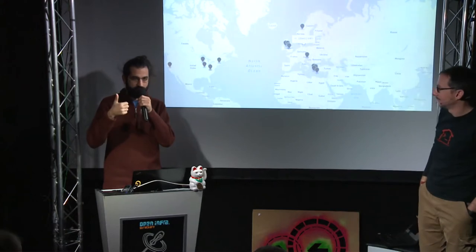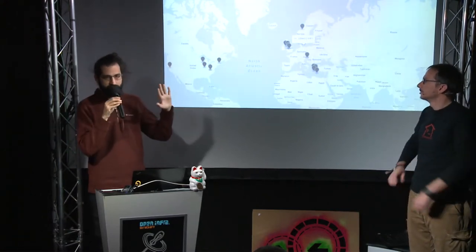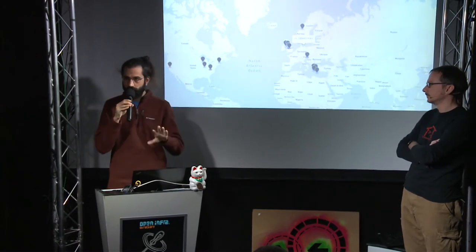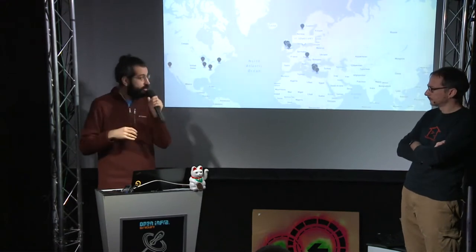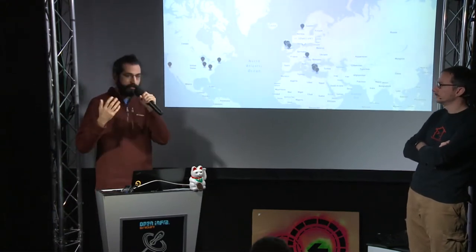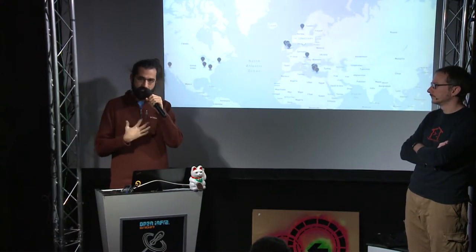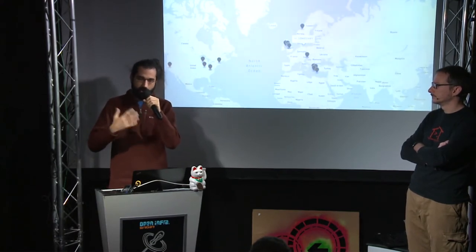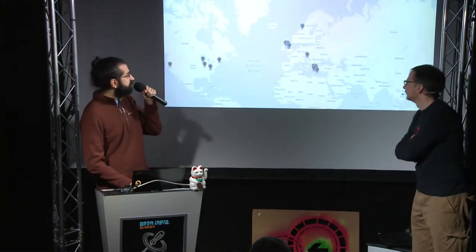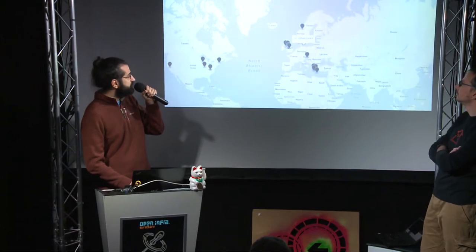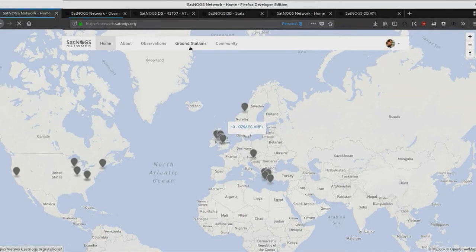We have information on the database at db.satnogs.org, and the network relies on this information to do observations. I'm going to walk you through a typical process for an observer — if I have a ground station, how do I schedule observations, see results, and what can I do with them? Let's start by looking at the list of ground stations.